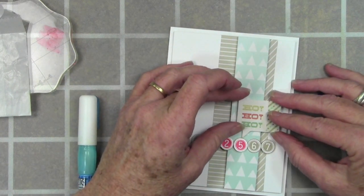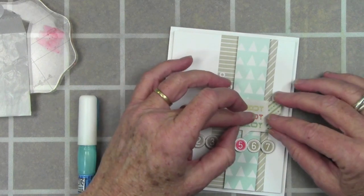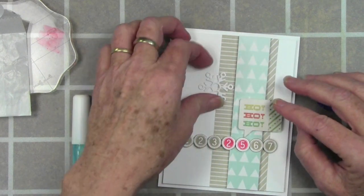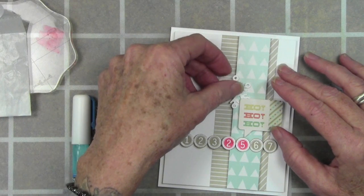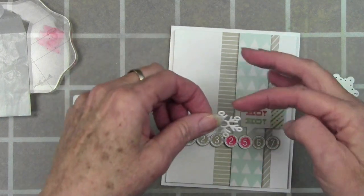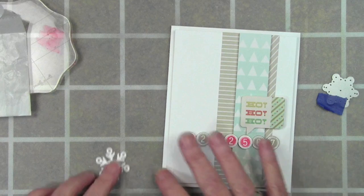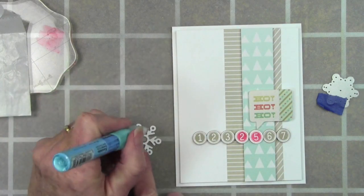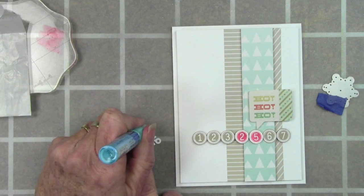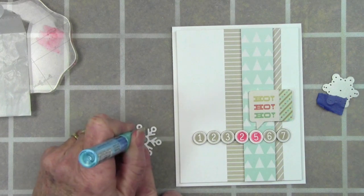Now that's kind of pointing at the 25 and my snowflake will sit under the sticker like that. But I want to put some glue just on the one side, so I'm using my two-way glue pen. I'll just add a few dots of glue and then I can affix that to the card.